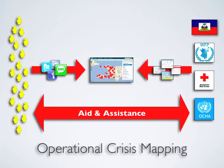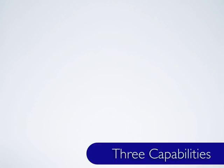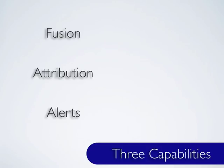The operationalization of crisis mapping technology would require the implementation of three fundamental capabilities: data fusion, source attribution, and automated alerts.